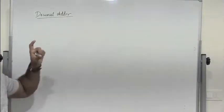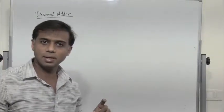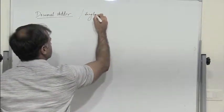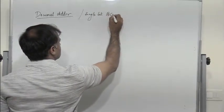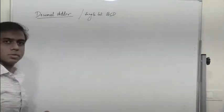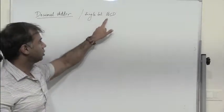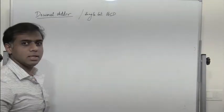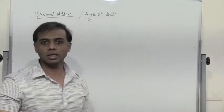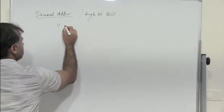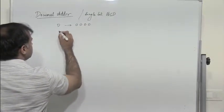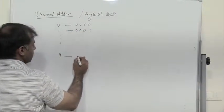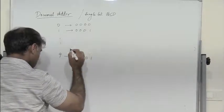In this segment we will discuss the implementation of a decimal adder or a single bit BCD adder. BCD stands for binary coded decimal. We have a 4-bit binary representation for all decimal numbers, where 0 is represented by 0000, 1 is represented by 0001, and so on up to 9 which is represented by 1001.